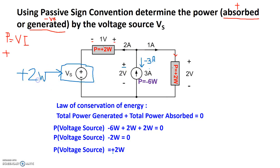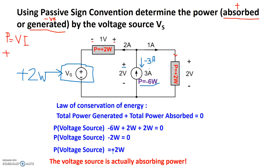So 2 watts of power is absorbed by the voltage source, 2 watts across this element, 2 watts across this element — that's a total of 6 watts absorbed. This current source is generating 6 watts of power. We have a total of 6 watts being absorbed and 6 watts being generated, so the law of energy conservation holds. In this example, the voltage source is actually absorbing power because there's another source of energy — the current source — that's the main supplier. This concludes the video on passive sign convention and energy conservation.